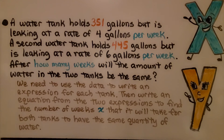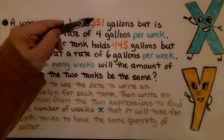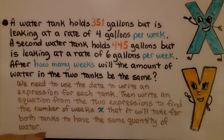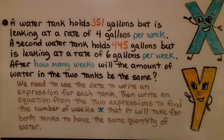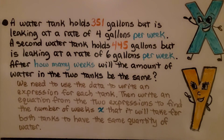Here's our next problem. A water tank holds 351 gallons but is leaking at a rate of 4 gallons per week. A second water tank holds 445 gallons but is leaking at a rate of 6 gallons per week. After how many weeks will the amount of water in the two tanks be the same? They're holding different quantities and also leaking at different rates — this one at 4 gallons a week, this one at 6 gallons a week. We need to use the data to write an expression for each tank, then write an equation to find the number of weeks x for both tanks to have the same quantity of water.